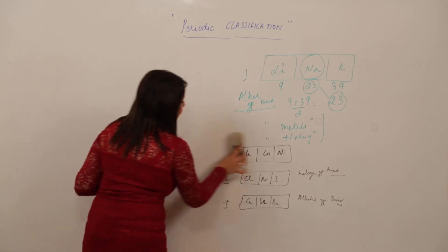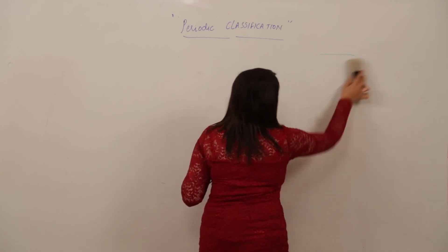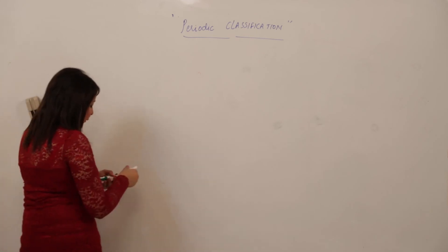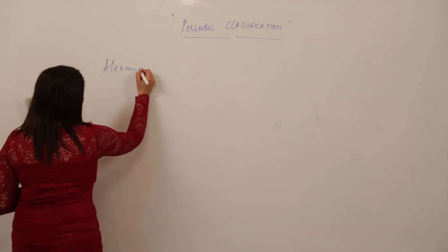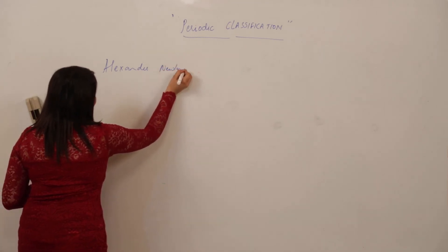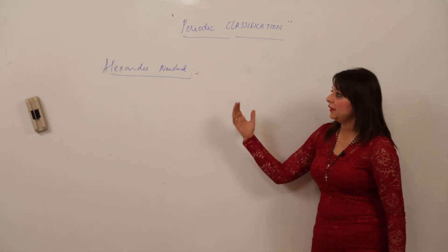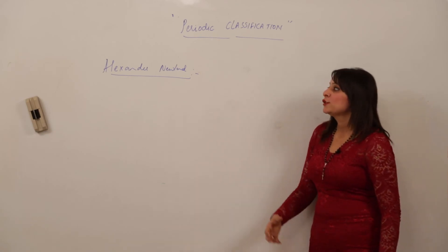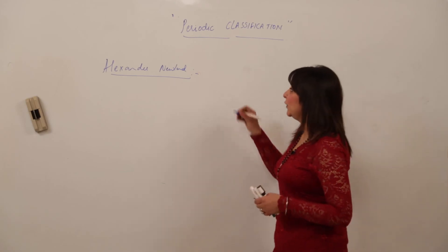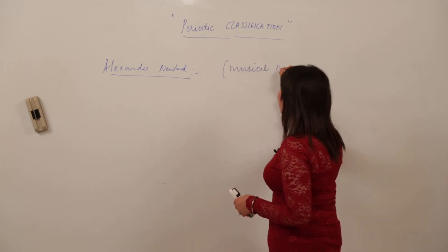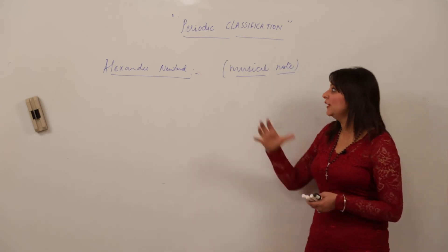The next attempt at classifying elements was made by the English chemist Alexander Newlands. We should know what criteria he kept in mind. His classification was entirely different because he classified the elements on the basis of musical notes. As you must have heard, musical notes are: Sa, Re, Ga, Ma, Pa, Dha, Ni, Sa.